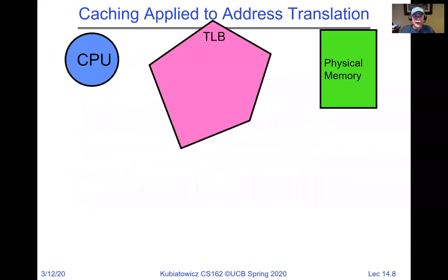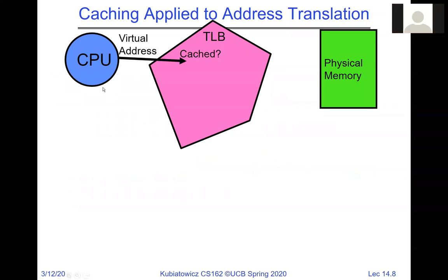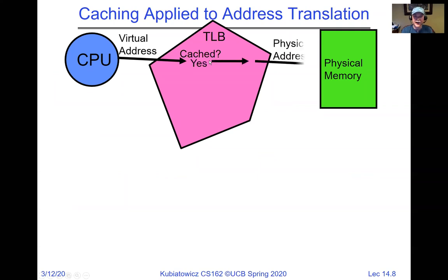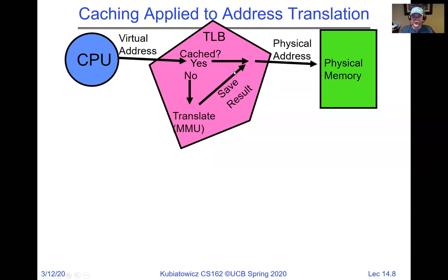How do we apply this to address translation? The CPU generates virtual addresses, we check whether they're cached in the TLB, and if they are, we go directly to physical memory. The TLB effectively speeds up access so we're not going all the way down to memory for every translation. If we're unlucky and miss, we go to the MMU, save the result in the TLB, and go forward.